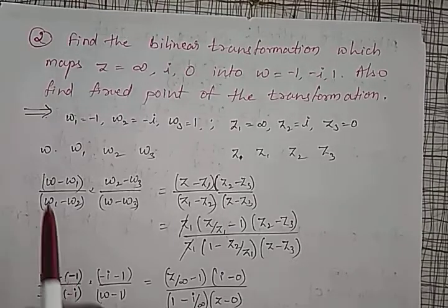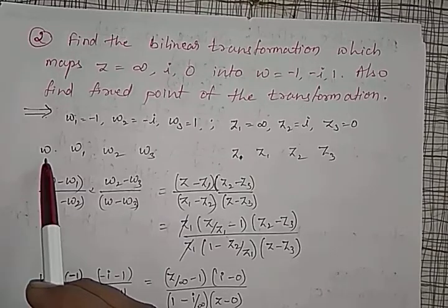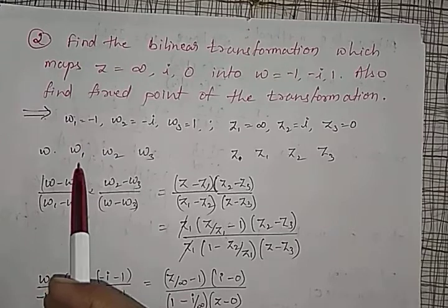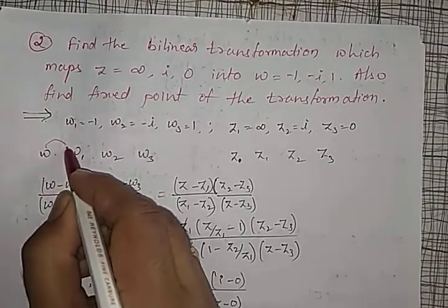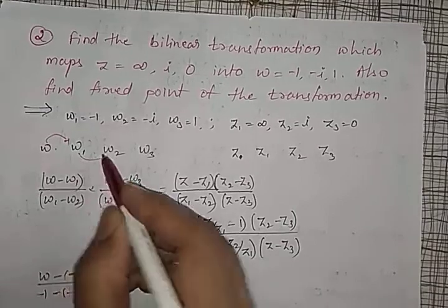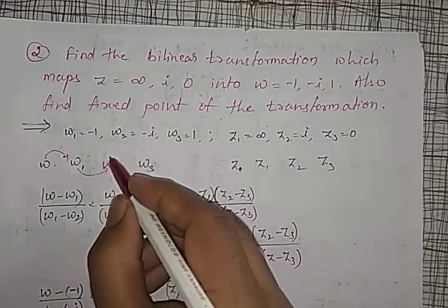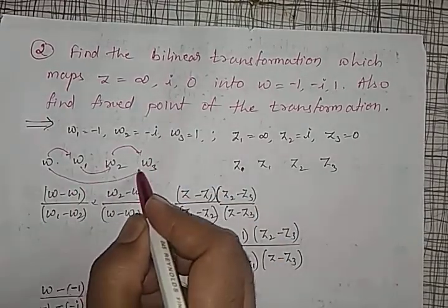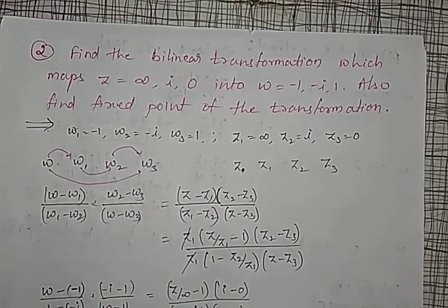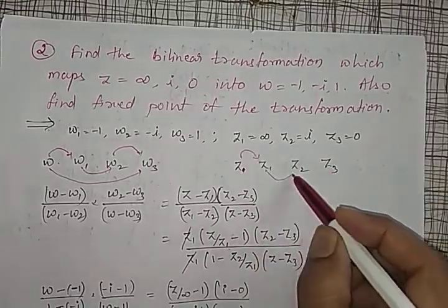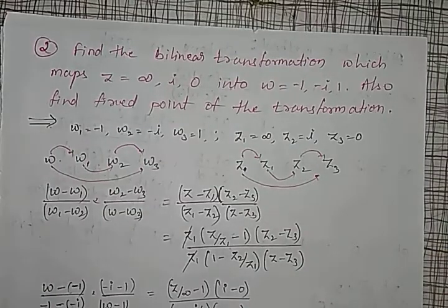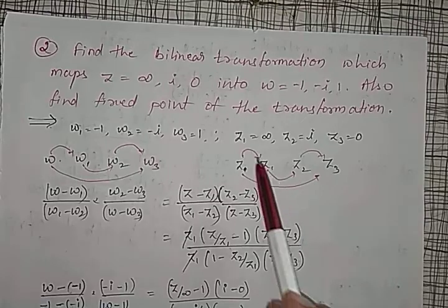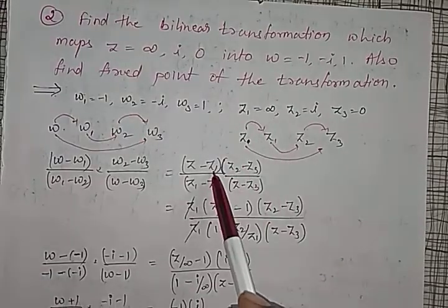I will solve this by the cross-ratio method. In the cross-ratio method, already discussed in the previous lecture, four points in omega and four points in z preserve the cross ratio. Therefore: (omega minus omega1)/(omega1 minus omega2) times (omega2 minus omega3)/(omega minus omega3) equals (z minus z1)/(z1 minus z2) times (z2 minus z3)/(z minus z3). This is the cross-ratio equality for four points.